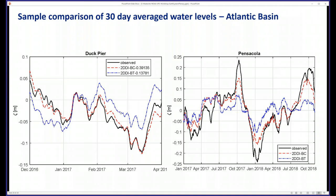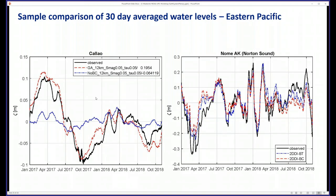Very similar results in Pensacola. We don't have enough resolution on the Florida shelf yet, so we're improving that. In Callao, South America, you can see that the black line is the measured and the blue is the barotropic signal — it's very baroclinically dominated over there. And it works really well.